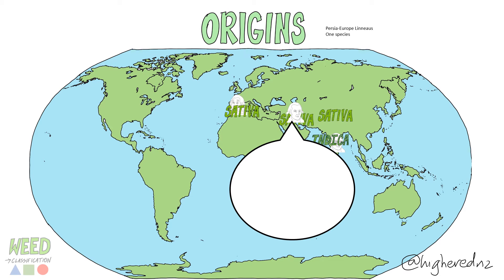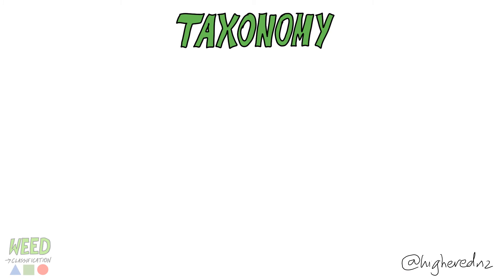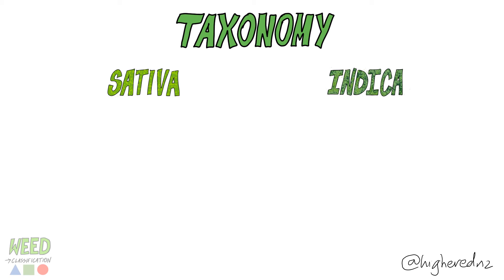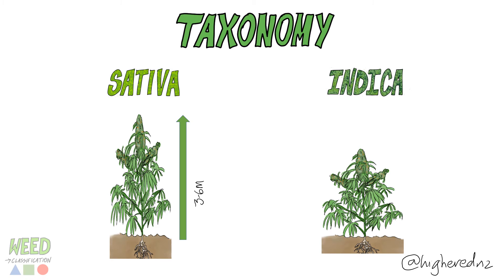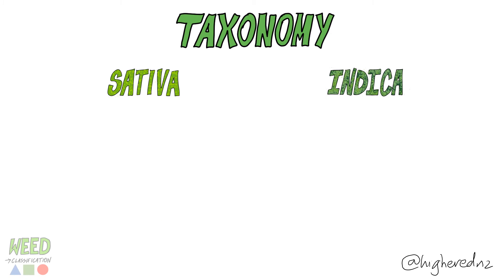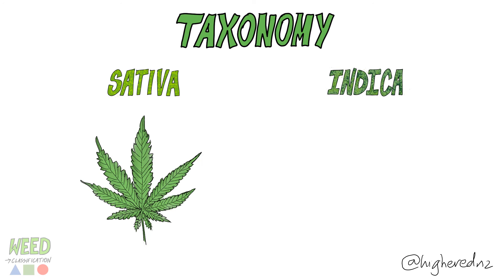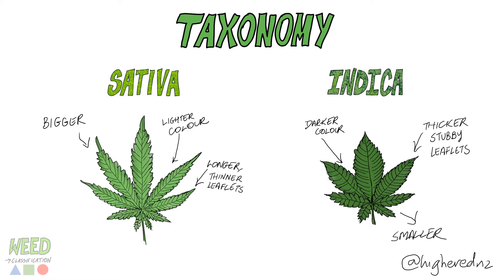Some of the differences that Lamarck believed separated sativa from indica include height, branching, leaflets, inflorescences, seeds, aroma, phytochemistry, and stalks. Sativa usually grows taller, to a height of three to six meters, while indica is usually shorter at one to two meters. There are also differences in leaflet morphology: sativa's leaflets are bigger, lighter colored, longer, and thinner, while indica's are smaller, darker colored, and thicker and stubbier.